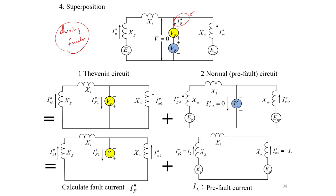Our goal is to find if''. Using superposition, we decompose the during-fault circuit into two sub-circuits: picture one and picture two. Picture one contains one voltage source and picture two contains three voltage sources — four sources in total. We then examine what each sub-circuit represents.